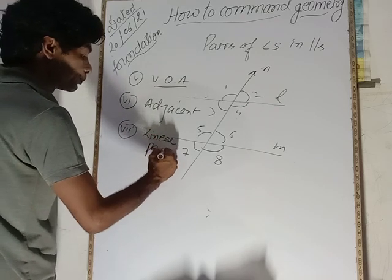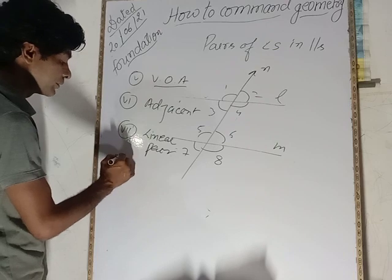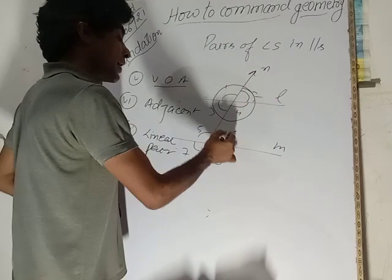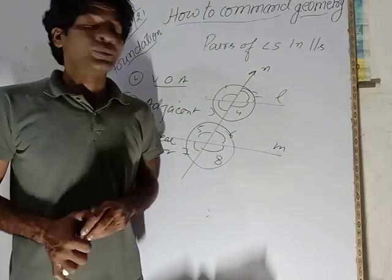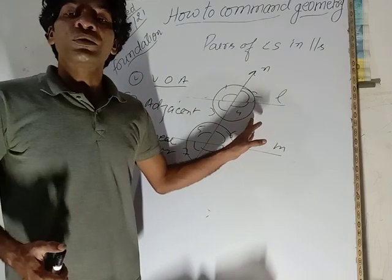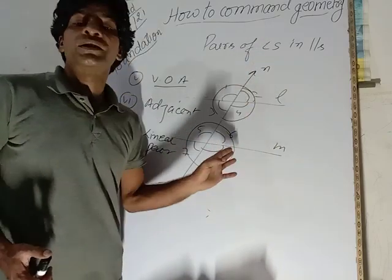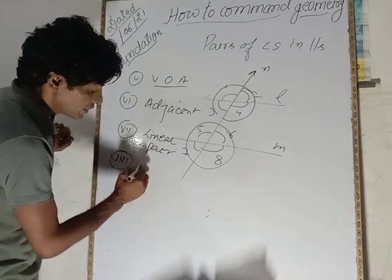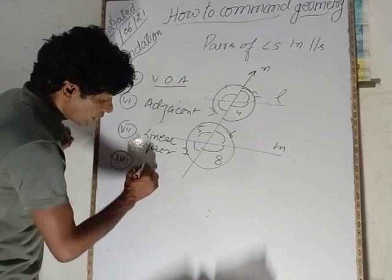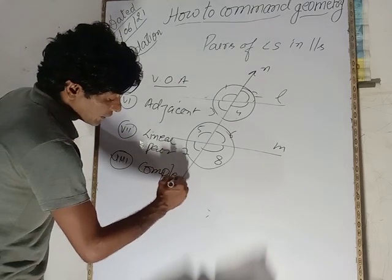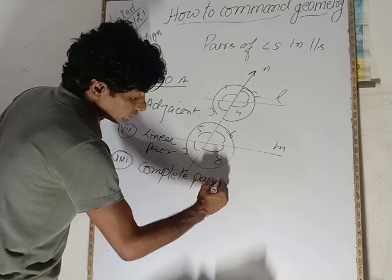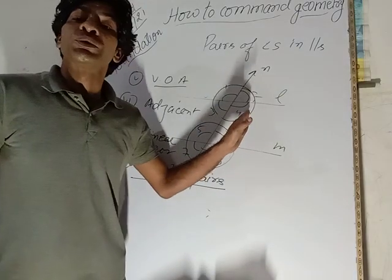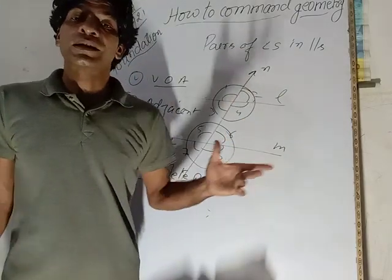The eighth type is the complete pair. When two angles together complete 360°, they form a complete pair. So both angles solely completing 360° are called complete pairs. Now you have seen everything — all the pairs of angles located at the intersection of parallel lines.